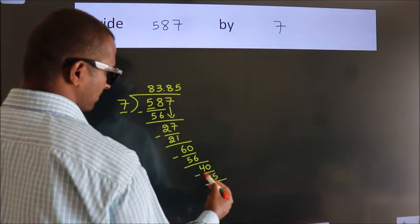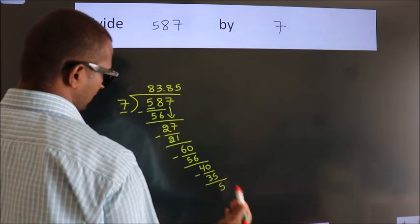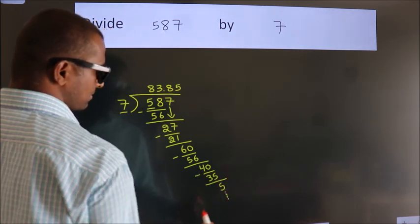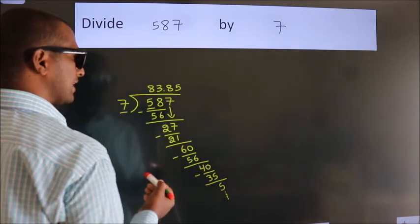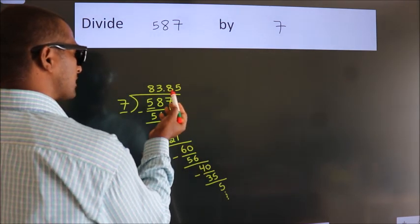Now we subtract. We get 5, and the division continues. It is enough if we do up to 2 decimal places.